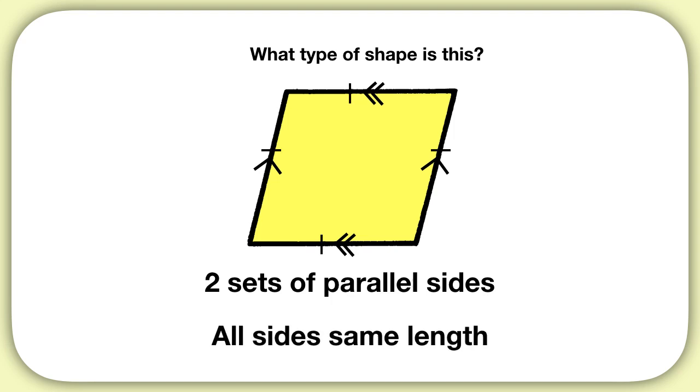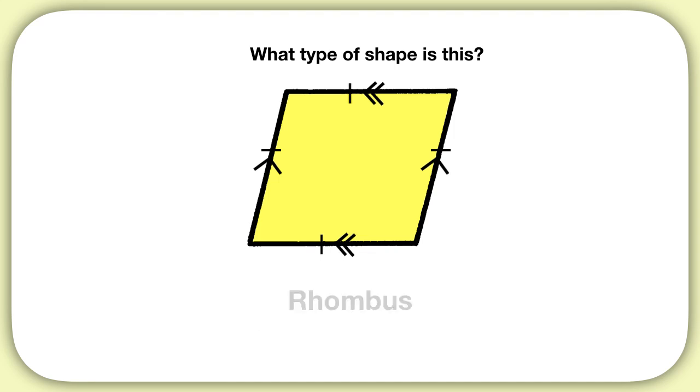So what type of shape is this? When you have two sets of parallel sides and all sides are the same length, you have a rhombus.